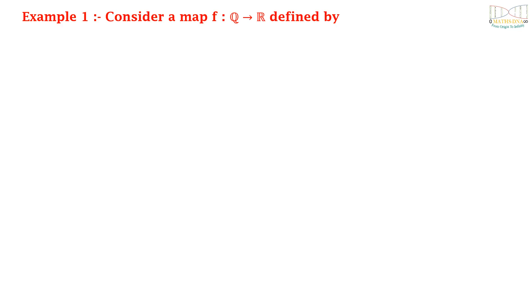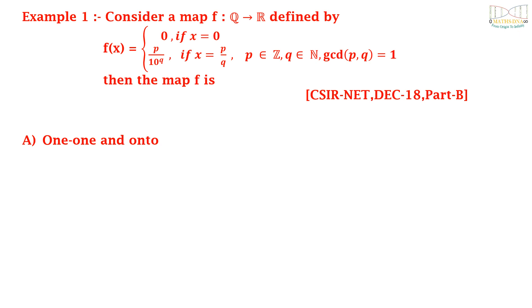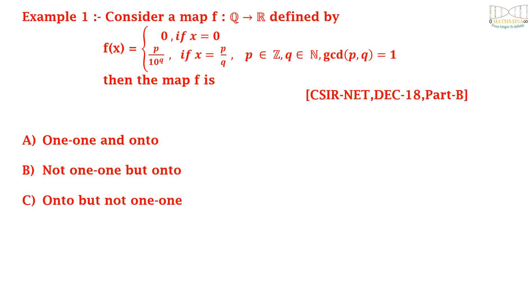Now let us solve some examples from the competitive exam. Example 1: consider a map f from Q, the set of rational numbers, to R, the set of real numbers, defined by f(x) = 0 if x = 0, and p divided by 10 raised to q if x = p/q, where p belongs to Z, q belongs to N, and gcd(p, q) = 1. Then the map f is: (a) 1-1 and onto, (b) not 1-1 but onto, (c) onto but not 1-1, or (d) neither 1-1 nor onto.